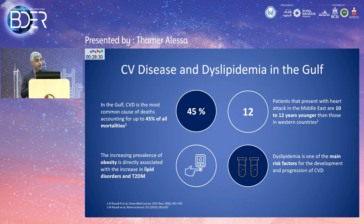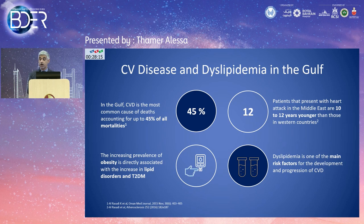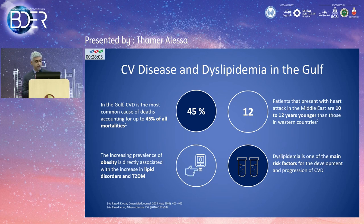In the Gulf, cardiovascular disease is the most common cause of death, accounting for about 45% of all mortalities. The increasing prevalence of obesity is a direct cause for the development of type 2 diabetes and dyslipidemia. Patients who present with heart attacks in the Middle East are 10 to 12 years younger than those in Western countries. Dyslipidemia remains the main risk factor for cardiovascular disease, and we have to manage it aggressively.